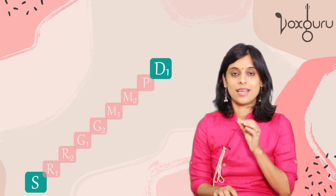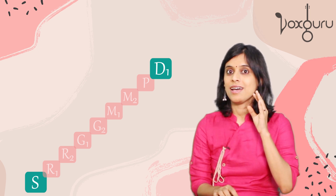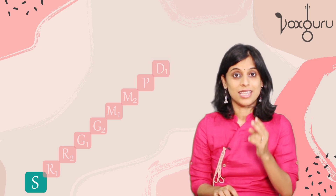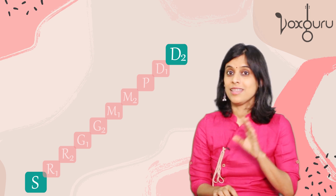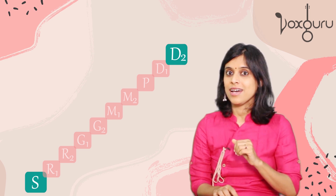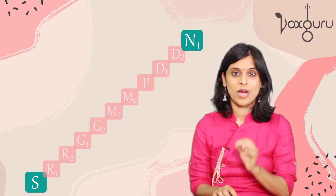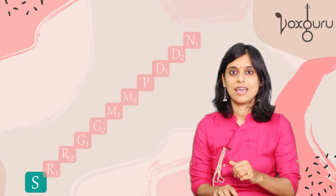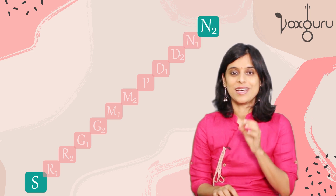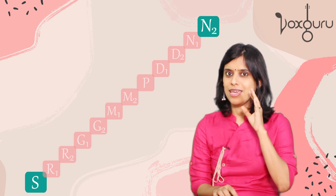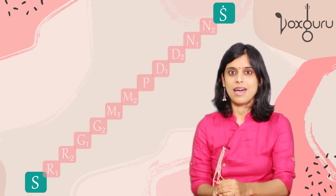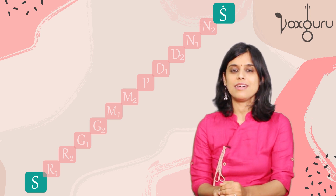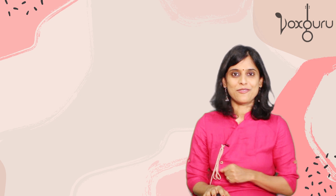Then Pa — Sa Pa. Da — Sa Da. Ni 1 — Sa Ni. Ni 2 — Sa Ni. And the higher Sa — Sa Sa. Now let's try it faster.